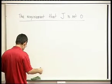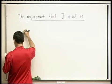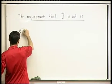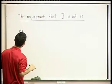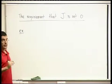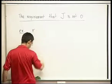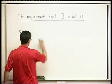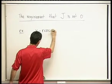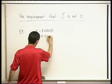Let me start with an example. Let's look at the r-theta change of variables. So x equals r cosine theta, and y equals r sine of theta.